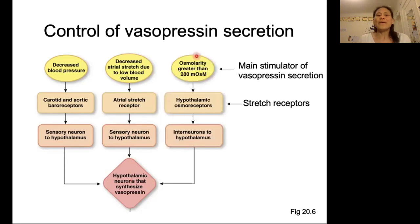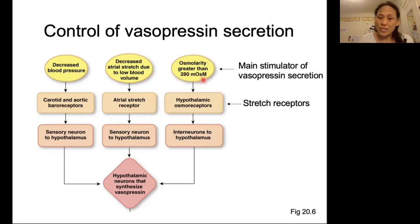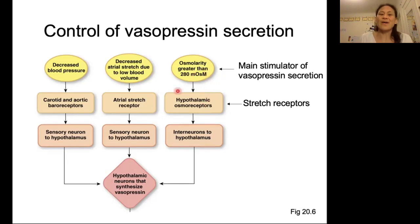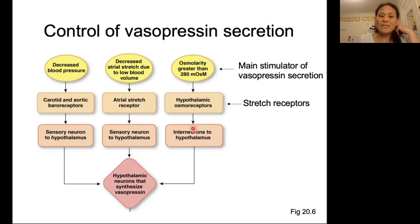The last stimulus is osmolarity. It is going to be a high osmolarity that stimulates vasopressin secretion. If we have a high osmolarity, we don't want to lose more water to the external environment because that would make the problem worse — it would make our osmolarity even higher. We sense osmolarity in the hypothalamus via osmoreceptors, which are stretch receptors. Those osmoreceptors send a signal through nearby neurons to another part of the hypothalamus where vasopressin will be synthesized.